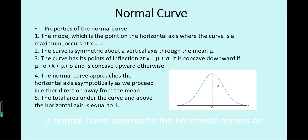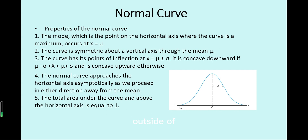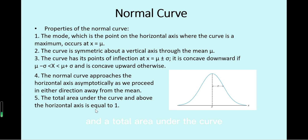A normal curve approaches the horizontal axis asymptotically as we proceed in either direction away from mu. Usually beyond mu minus three sigma, the density is very low, approaching zero.